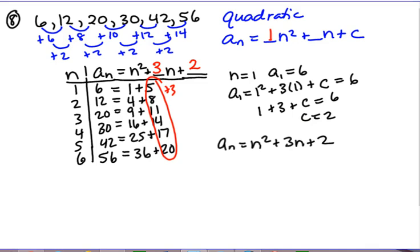Now it's always a good idea to check with another term to make sure that rule is correct. So if I want to see, if I put in 2 for n, do I get 12? So a sub 2 equals 2 squared plus 3 times 2 plus 2. That's 4 plus 6, which is 10, plus 2 is 12. So that checks out. So this appears to be a good rule for my sequence.